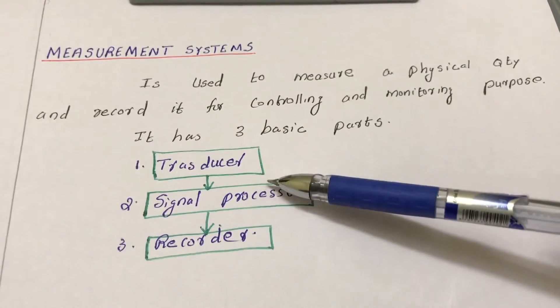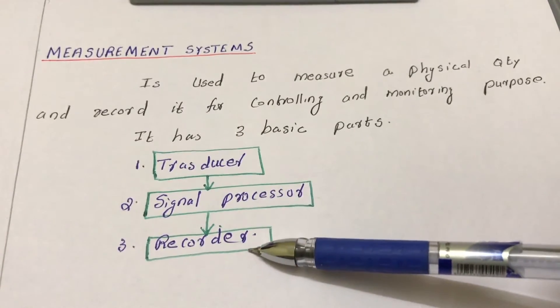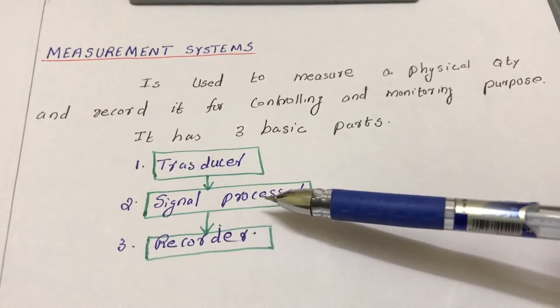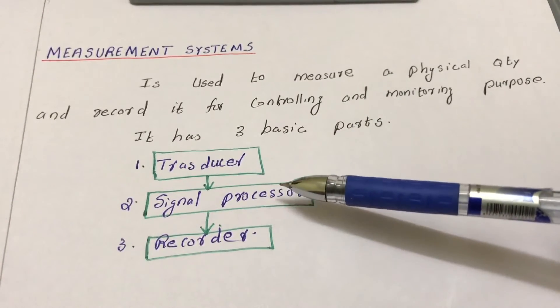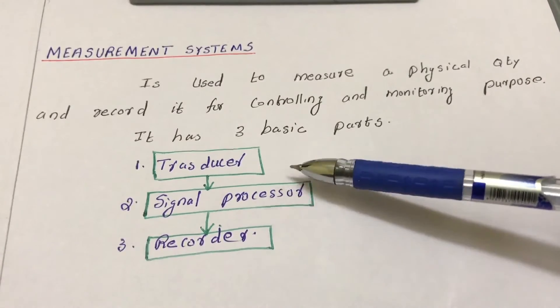After the signal processor, it goes to the recorder. The recorder is an instrument or a computer that simply displays and maintains the sensor data for online monitoring and subsequent processing.